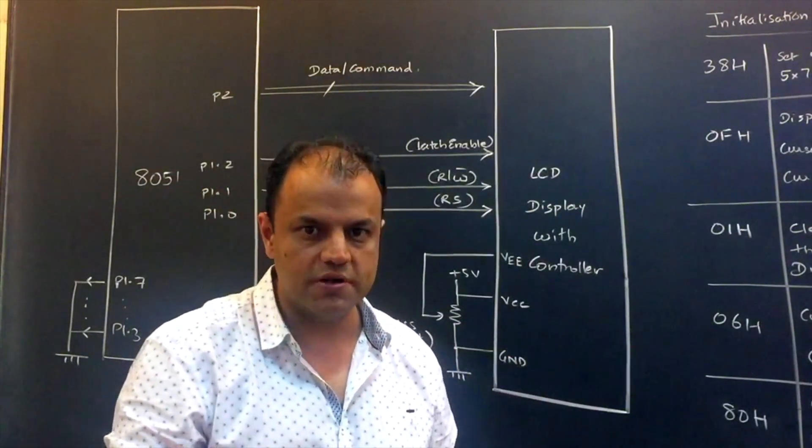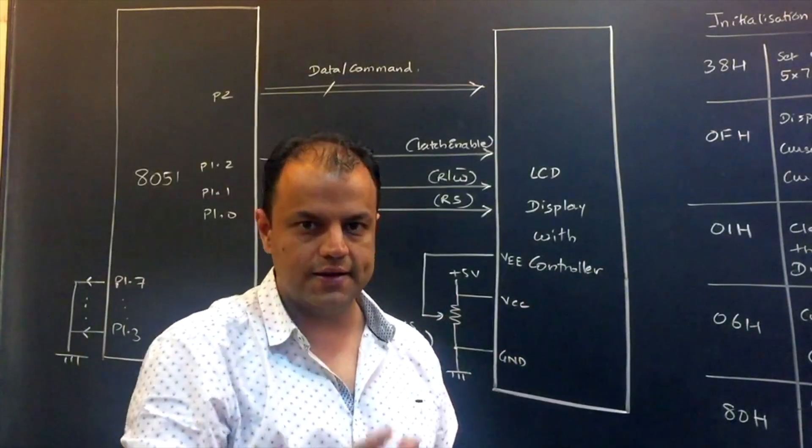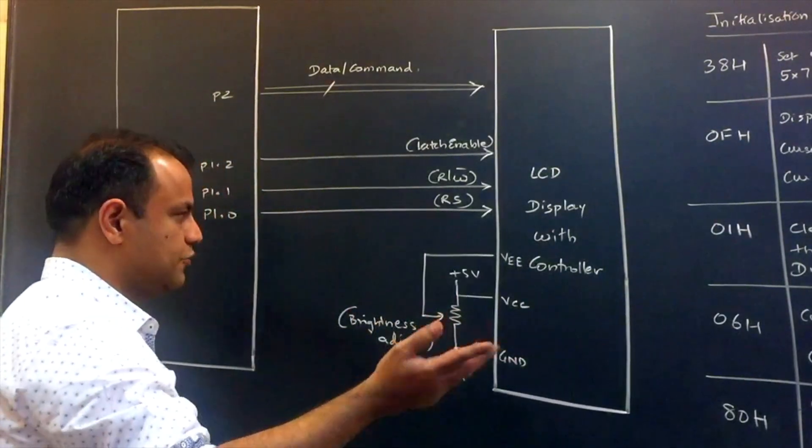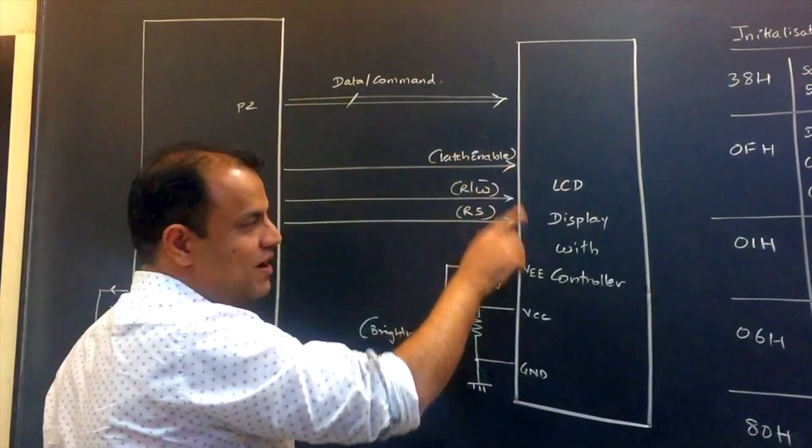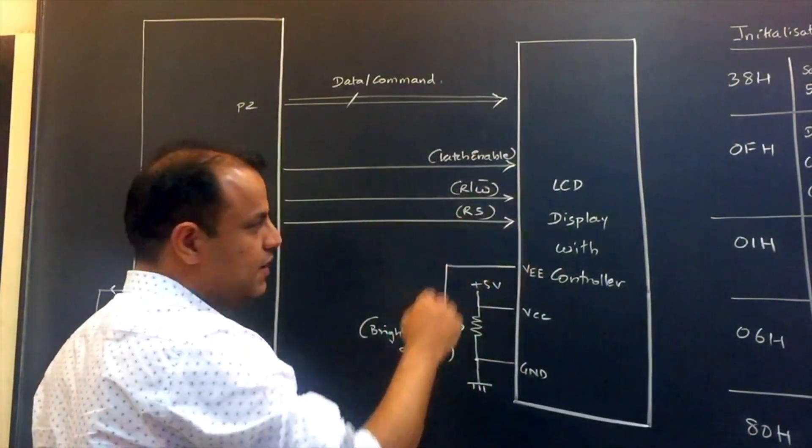So whether it is a data or a command is decided by the signal called RS. RS stands for Register Select. RS can be 0 or 1. If RS is 0, that means you're sending a command. If RS is 1, that means you're sending data. First you send commands. The default value is 0. The first thing that you'll be sending is a command. Then you'll start sending data to actually display the values.